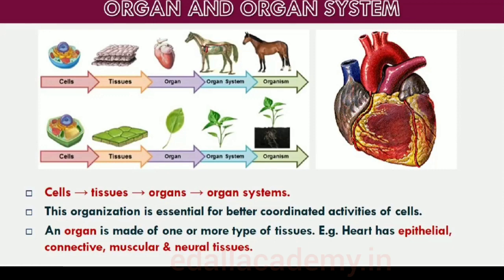All complex animals consist of only four basic types of tissues. These tissues are organized in specific proportion and pattern to form an organ like stomach, lung, heart and kidney. When two or more organs perform a common function by their physical and/or chemical interaction, they together form an organ system — for example, digestive system, respiratory system, etc.